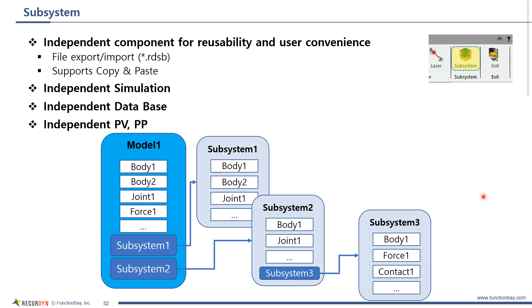After RecurDyn is launched, we can create bodies, joints, forces, and others. They are stored in a subsystem. We call this top-level subsystem a model. In other words, in RecurDyn, there is a top-level subsystem called model. Then, we can create bodies, joints, forces there. Also, subsystems in this model. Each subsystem in the model can have bodies, joints, forces in it, like subsystem 1 and subsystem 2 in this image. And subsystem 2 can have another subsystem.